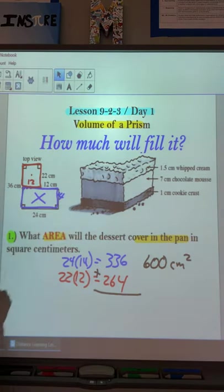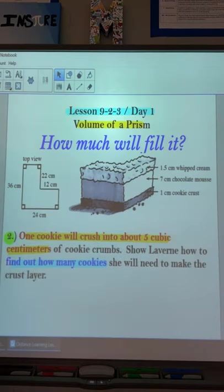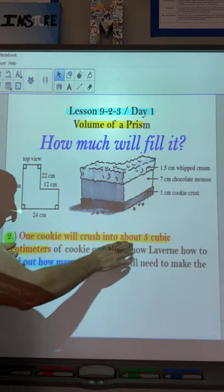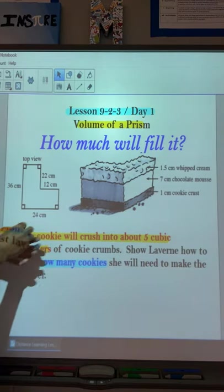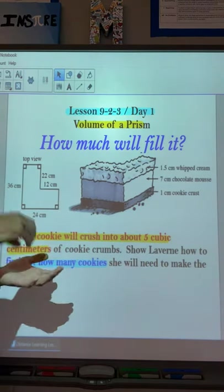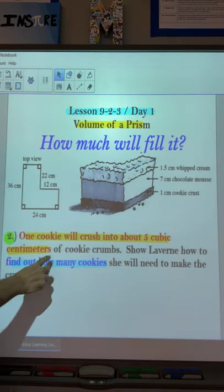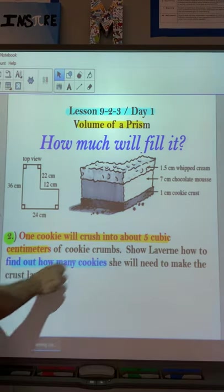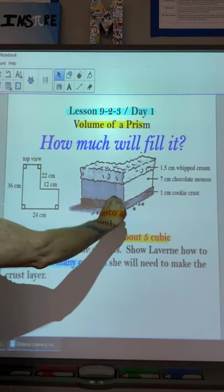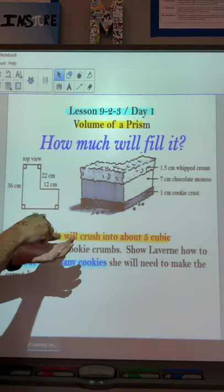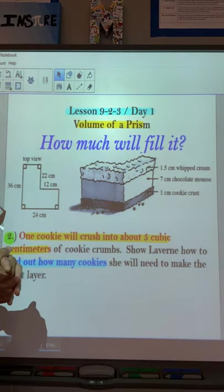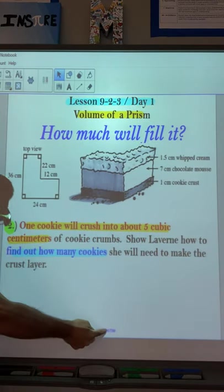So again, we're finding the bottom layer. Now that we have the bottom layer, let's move on to question two. It says one cookie, if we crush it up, it'll give me about five cubic centimeters. So if I crush up one cookie, it's going to give me five cubic centimeters of fill. What Laverne, so we've got to show Laverne, how do we find out how many cookies she's going to need to make this bottom layer? So the bottom layer is only one high. And one cookie is about five cubic centimeters. She needs to figure out how many cookies overall.